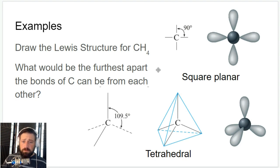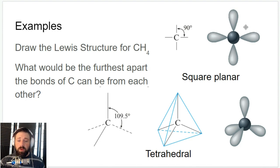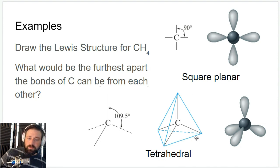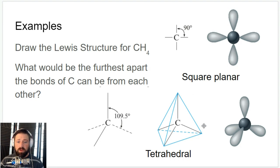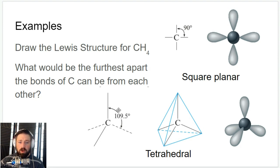If you take methane, CH₄, in a 2D world it would look like a square planar, but remember we're in 3D. In 3D it looks like this, and we call this tetrahedral. A tetrahedron is a geometric shape with four sides. The bond angles here are 109.5 degrees — 109.5 is one of those numbers you're just going to have to remember.